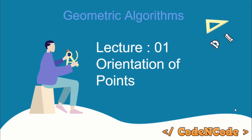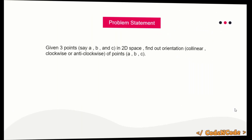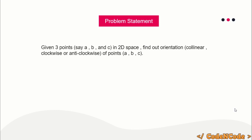Hello guys, this is Code in Code, and this is the first lecture of the Geometric Algorithm course series. In this lecture we are going to learn the very basic of geometric algorithms — that is, the orientation of given points. The problem statement is simple: you are given three points in 2D space, say A, B, C, and we have to find whether their orientation is collinear, clockwise, or anti-clockwise.